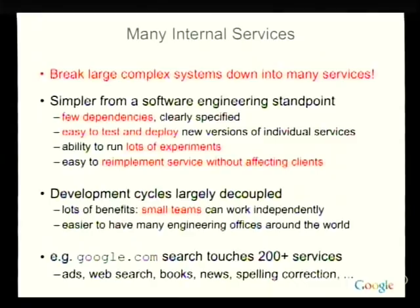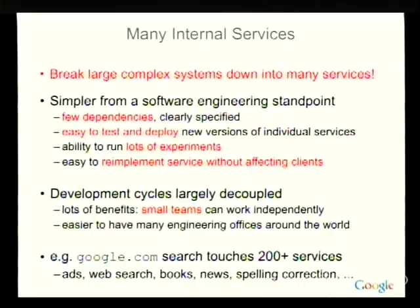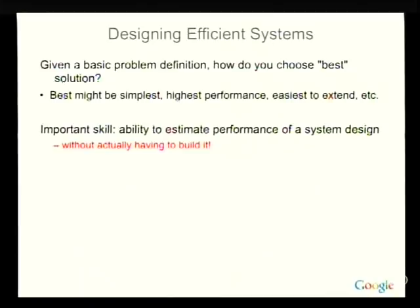Small teams can work independently by carefully defining these interfaces and services. That also makes it easier to have engineering offices around the world — we went from two or three engineering offices to 30 around the world about three or four years ago, and part of the reason we were able to do this is we could break things down into separate services and give ownership of those services to different offices. As an example, every search you do on Google.com touches 200 or more separate services.